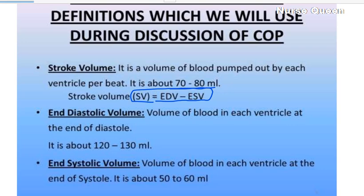The volume of blood we have in the heart — the right atrium, right ventricle, left atrium, and left ventricle — is the end diastolic volume at the end of heart relaxation. This is around 120 to 130 ml. End systolic volume is the volume of blood in each ventricle at the end of systole, which is the contraction phase.